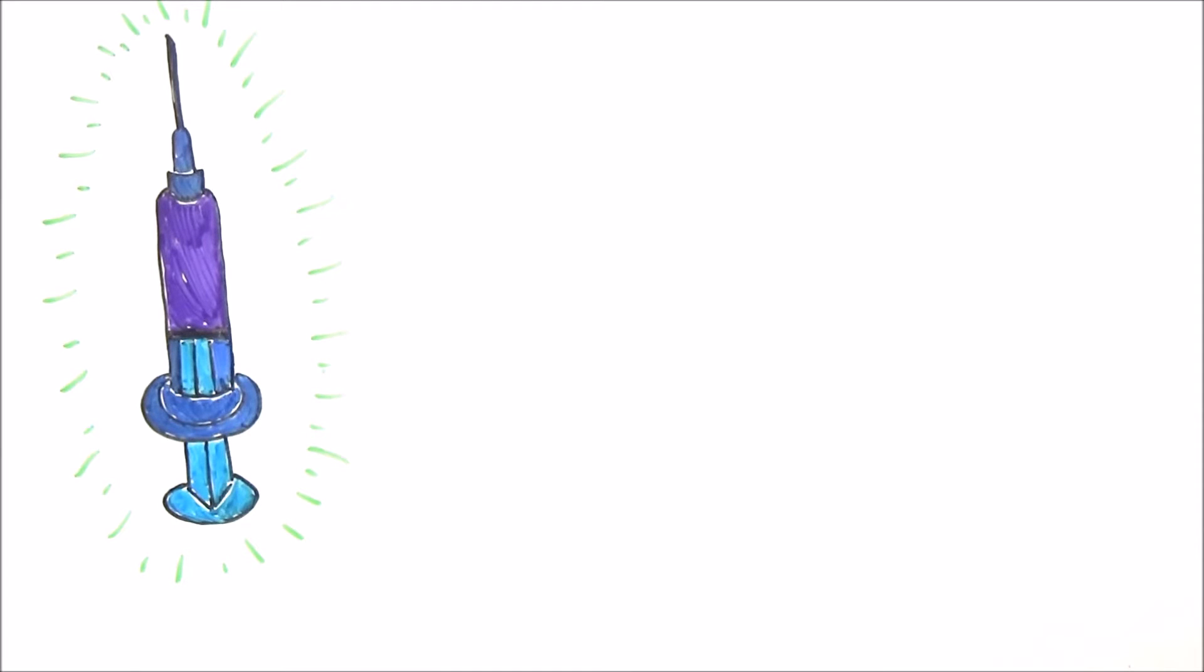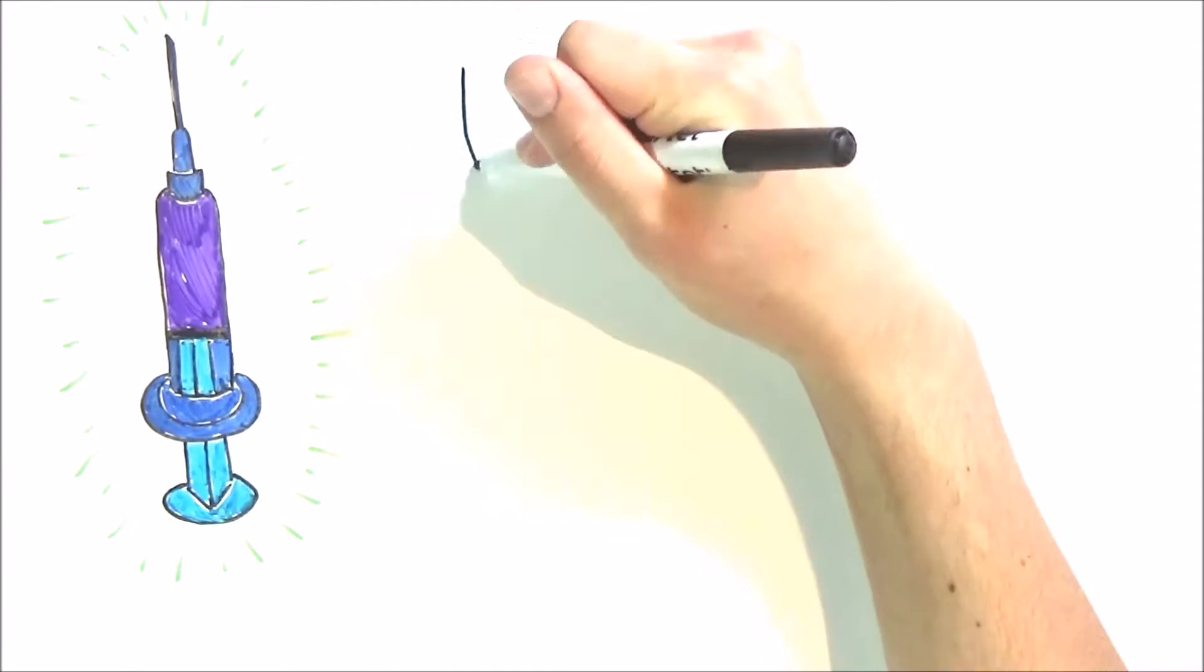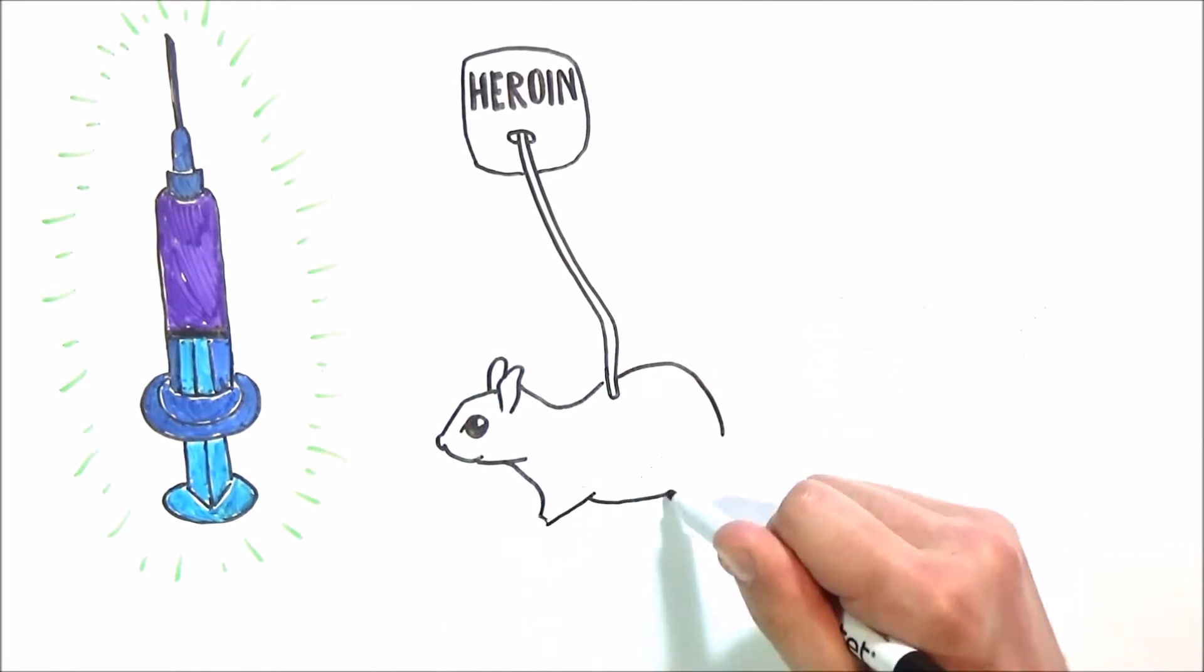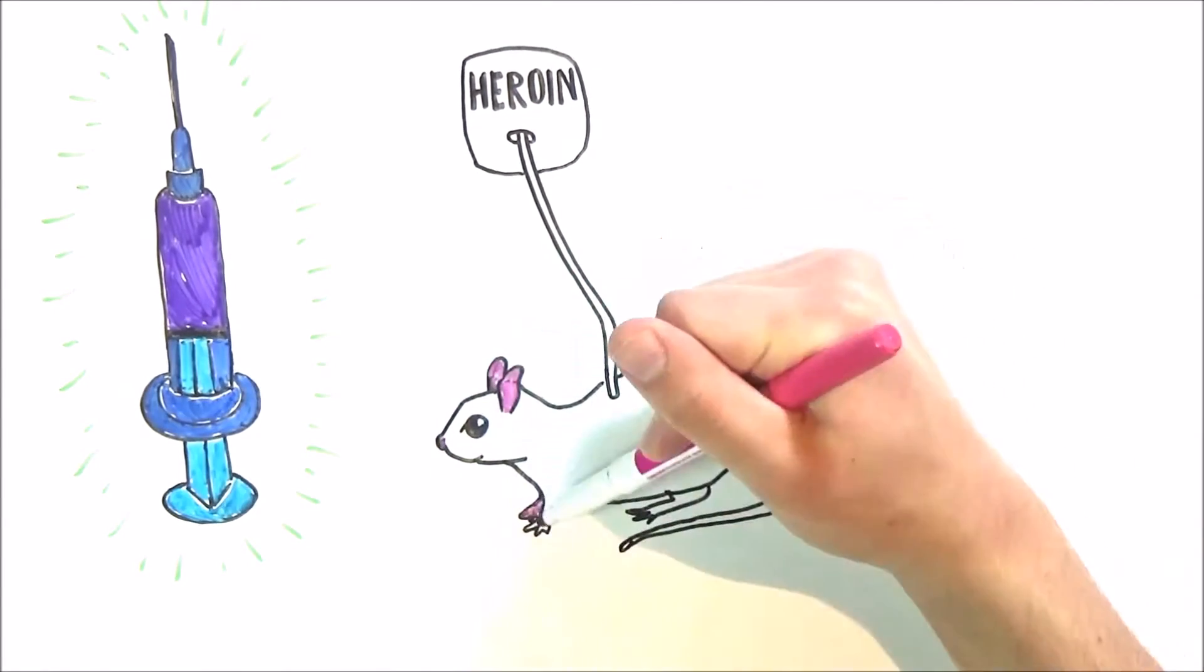In the 1960s, deceptive experiments took place. In these experiments, rats were connected to a supply of highly addictive drugs, such as heroin, through a tube that allowed the drug to quickly enter the bloodstream.